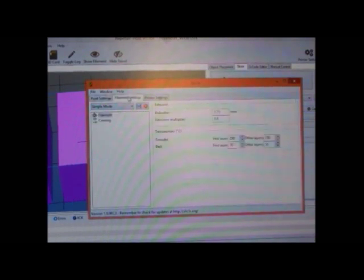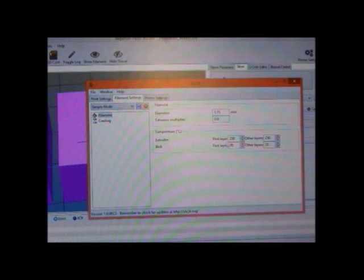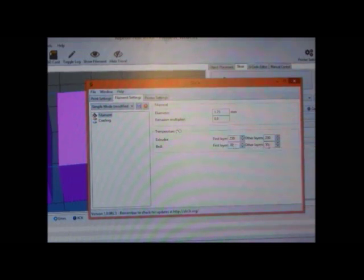Now in filament settings, put the diameter as 1.75mm, extrusion multiplier as 0.8. Set the temperature of the extruder to 230 degrees Celsius and other layers at 230. For the bed temperature, keep first layer at 70 and other layers at whatever temperature you like. We have kept at 55.